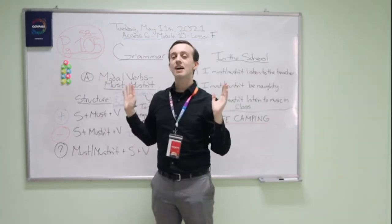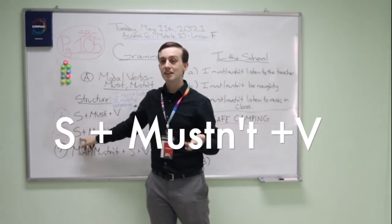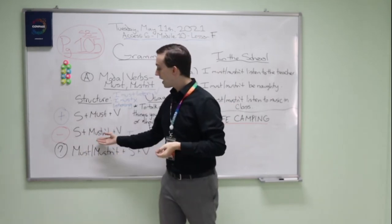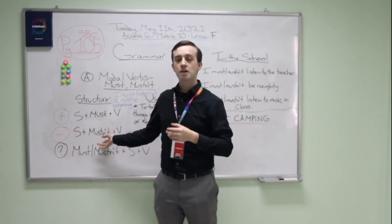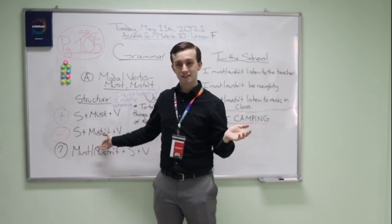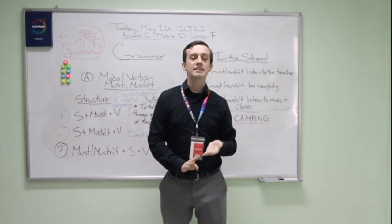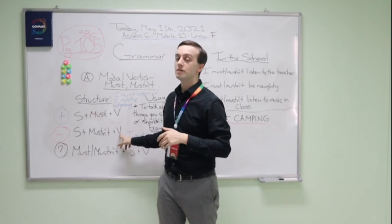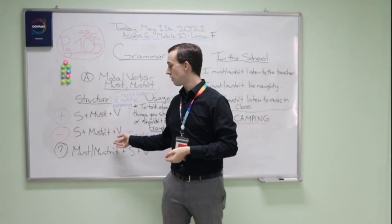For a negative sentence, the structure is subject plus mustn't plus verb. The subject can be I, you, he, she, it. Let's say this word — mustn't. An example is: you mustn't eat, or she mustn't run.